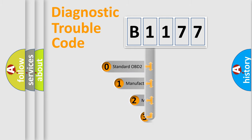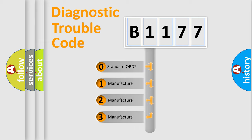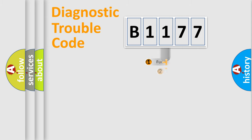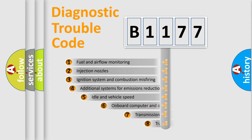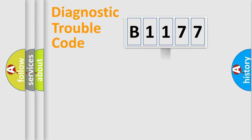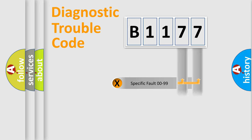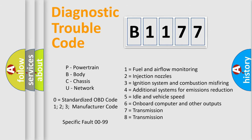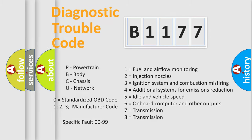This distribution is defined in the first character of the code. If the second character is expressed as zero, it is a standardized error. In the case of numbers 1, 2, or 3, it is a manufacturer-specific error. The third character specifies a subset of errors, and this distribution is valid only for the standardized DTC code. Only the last two characters define the specific fault of the group.